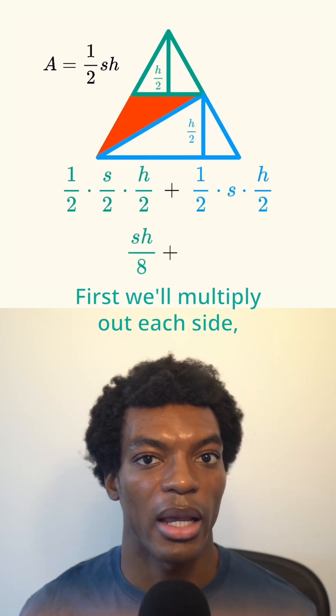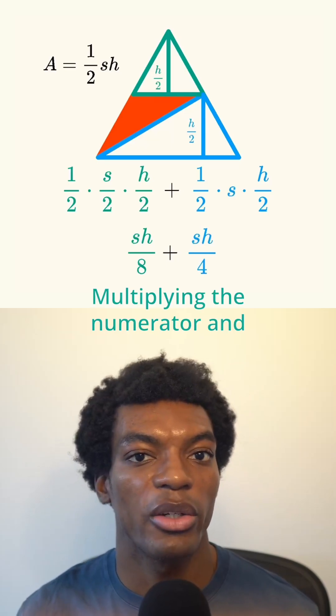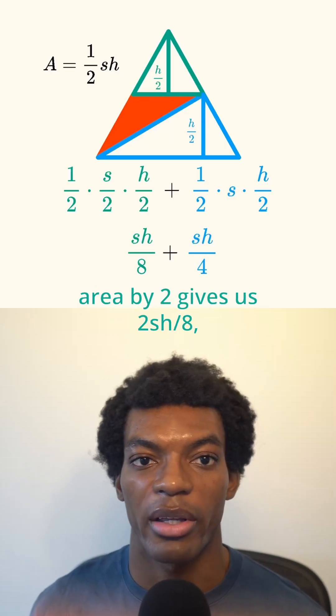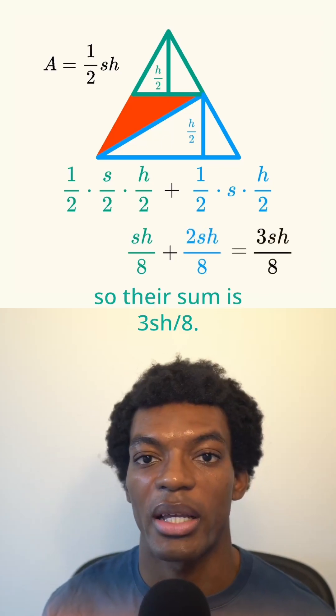First, we'll multiply out each side, giving us SH over 8 plus SH over 4. Multiplying the numerator and denominator of the blue area by 2 gives us 2SH over 8, so their sum is 3SH over 8.